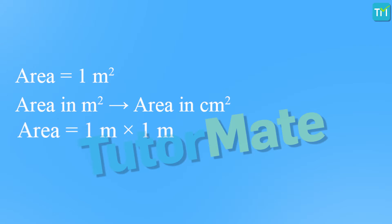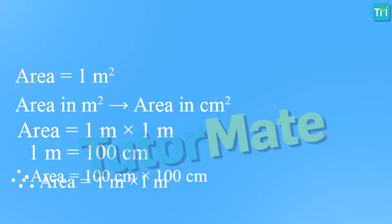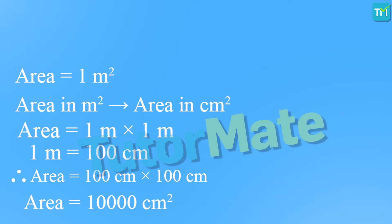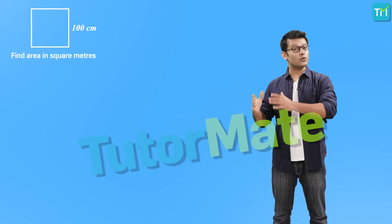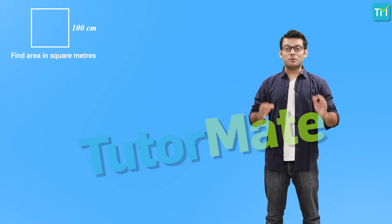The area of the square is side squared, so area equals 1 meter times 1 meter, which is 1 meter squared. Now, if area is given as 1 meter squared and we need to convert it to centimeters, we write it as 1 meter times 1 meter, and since 1 meter is 100 centimeters, the area becomes 100 cm times 100 cm, which is 10,000 centimeter squared.